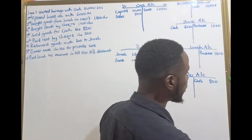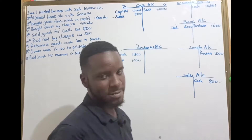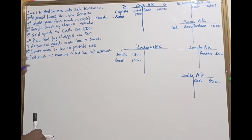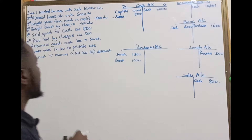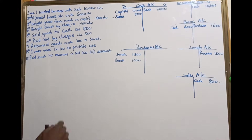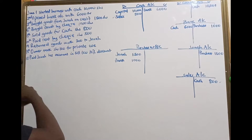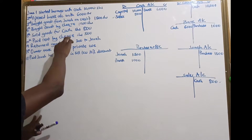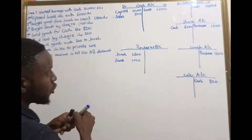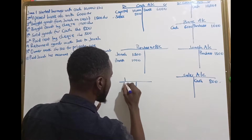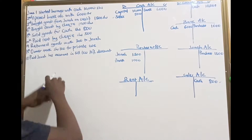As an accountant or auditor, you tick and say this transaction was correctly entered. The next step says paid rent by check, 500 shillings. The statement you read is what gives you the two accounts you are supposed to apply. We have the rent account and if it's by check, that means our money in the bank is being affected. Therefore you open up the rent account.